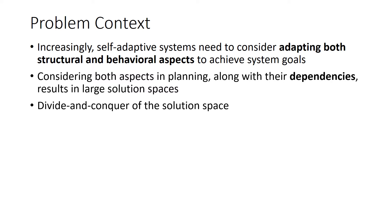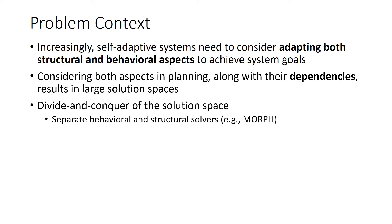Dividing and conquering the solution space can address this problem. Existing work like the reference architecture MORPH proposes employing different solvers to synthesize control for structural and behavioral aspects separately, and then includes a negotiation process to match behavioral and structural specifications to ensure they can be safely used together. For instance, an a posteriori negotiation should make sure the target architecture configuration includes all components required to carry out the actions needed by the task plan.